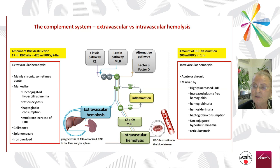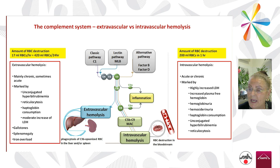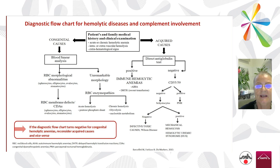Intravascular hemolysis is quite different — destruction is 200 ml in one hour. It is frequently acute, sometimes chronic. Markers of hemolysis, from most to least prominent, are increased LDH, increased plasma free hemoglobin, hemoglobinuria, hemosiderinuria, and then all the other signs previously mentioned.